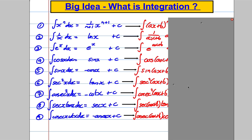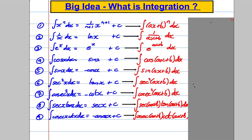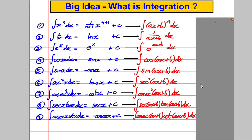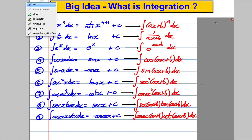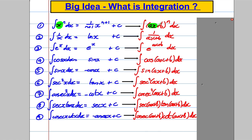In this video I'd like to move on to integrating very similar functions to those nine results. The difference is that instead of just having X, we now have a linear combination: ax plus b. So instead of 1/x we have 1/(ax+b), instead of e^x we have e^(ax+b), instead of cos(x) we have cos(ax+b), and the same pattern continues.